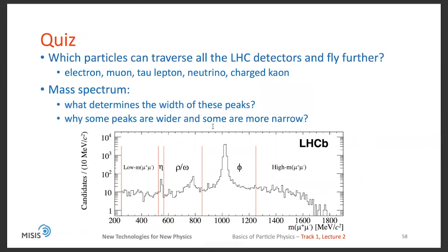We have several questions to think about and to discuss in the next lecture. First question is, which particles can traverse all the detectors and fly further? The choice is electron, muon, tau lepton, neutrino, or charged kaon. And again, the same plot with the mass spectrum which you already saw. Previously you saw that particles should correspond to mass peaks in the spectrum. Now the question is, what determines the width of these peaks? And why some peaks are wider and some are narrower?